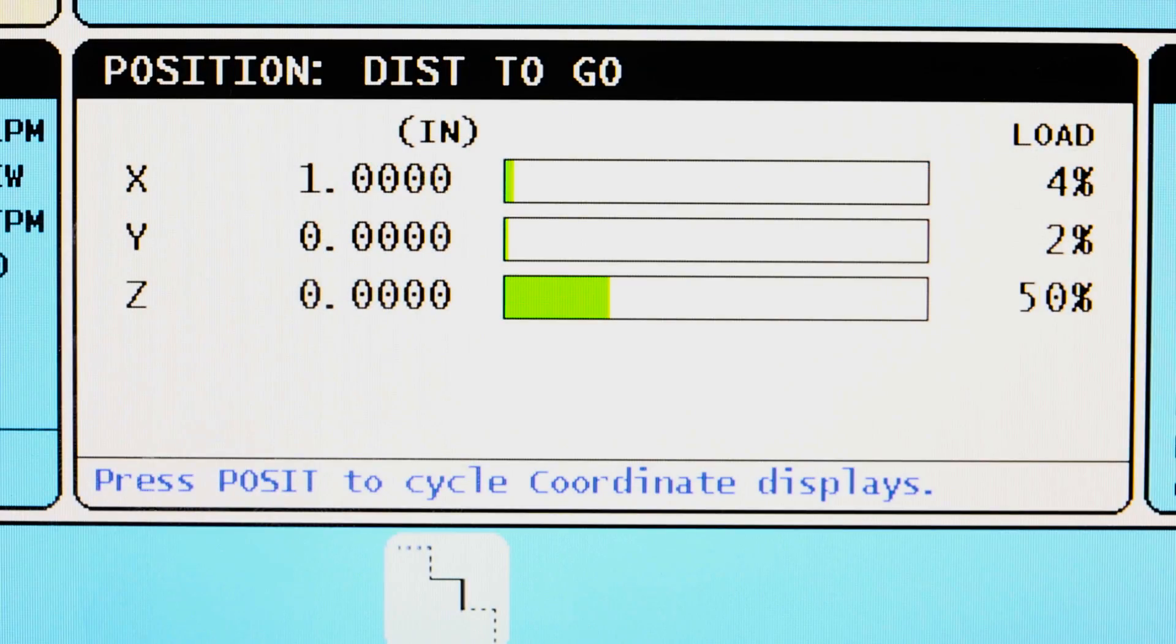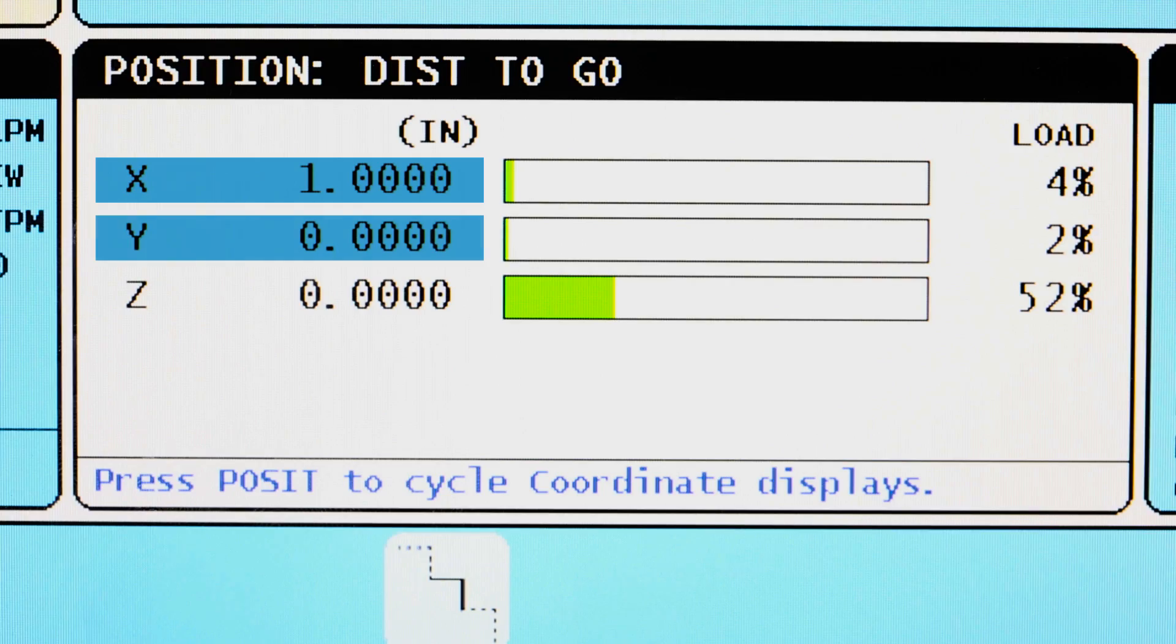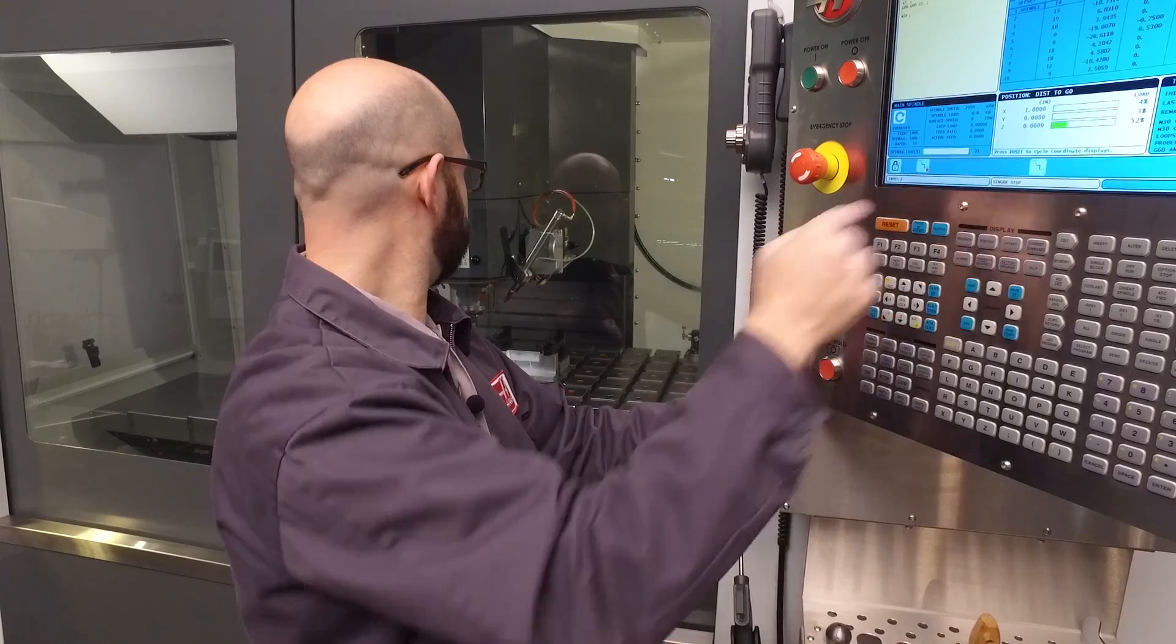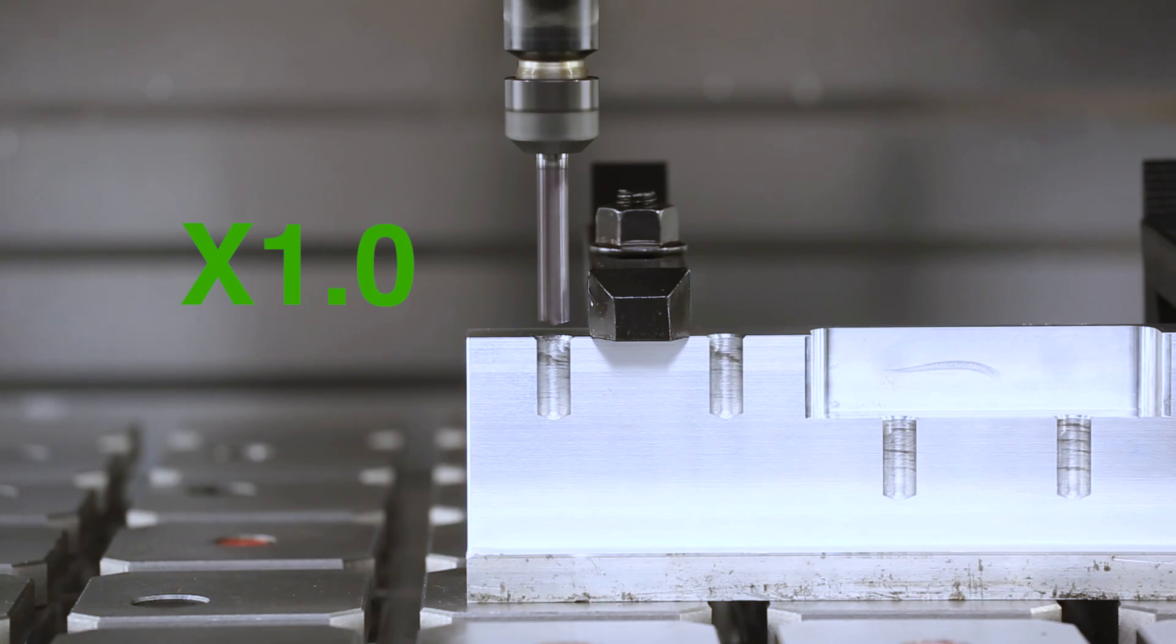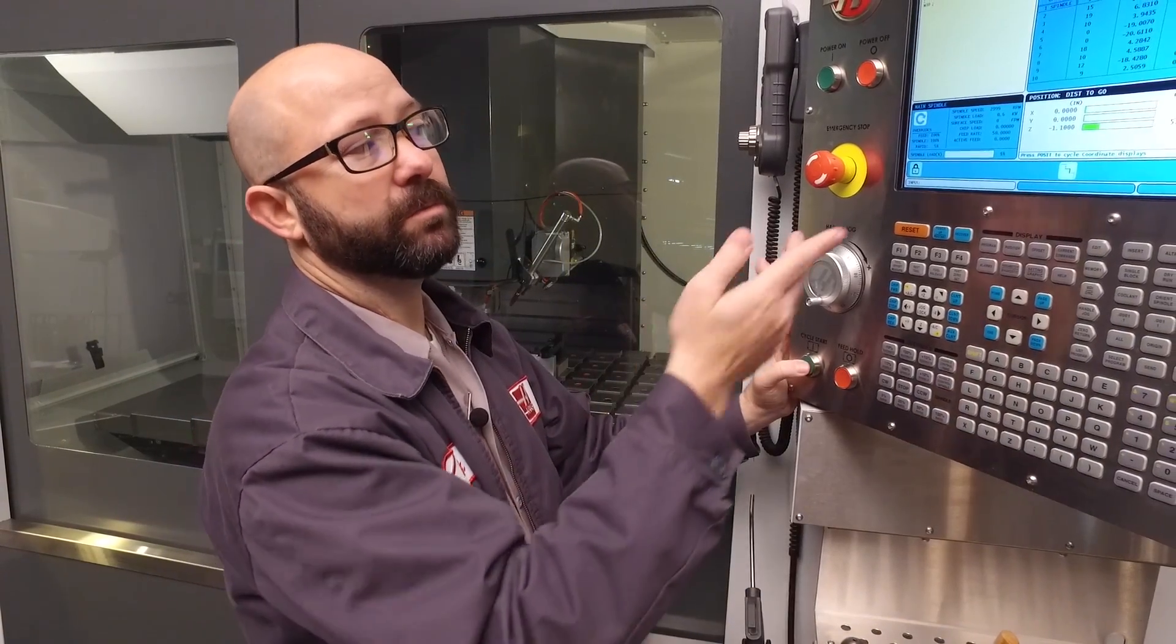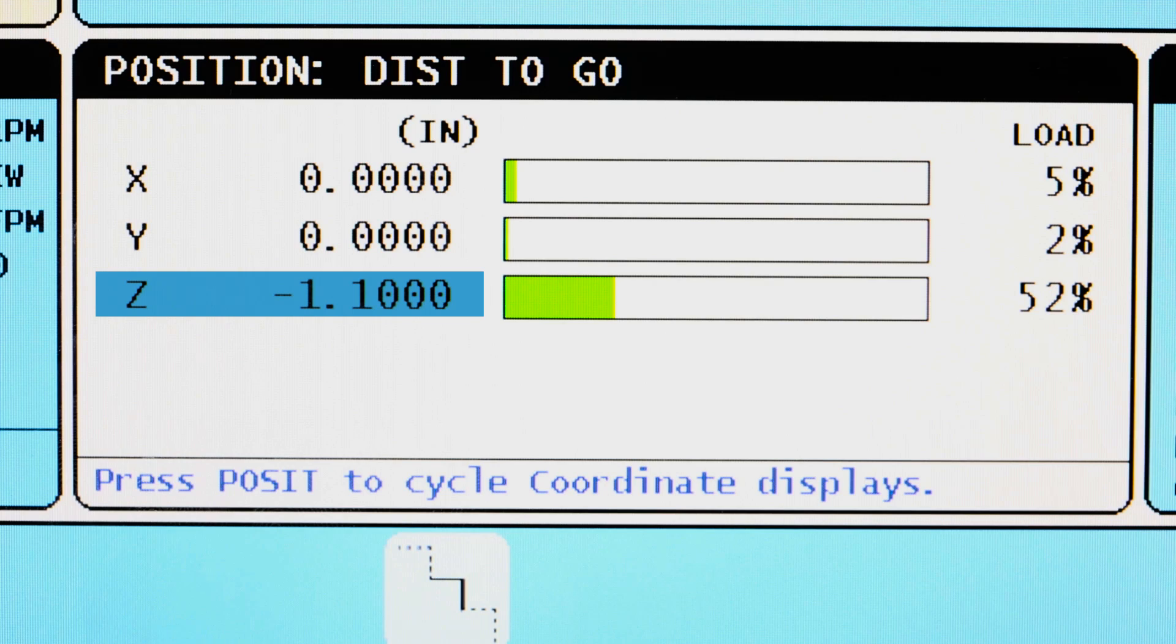My position screen now says X one inch, Y zero, Z zero. I can move one inch to the right. I'm just fine. It's now going to drill my hole, Z minus 1.1.